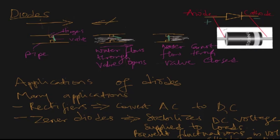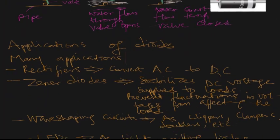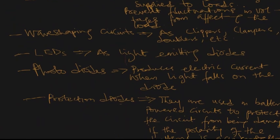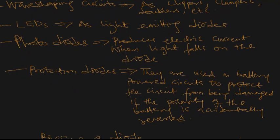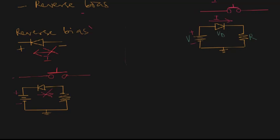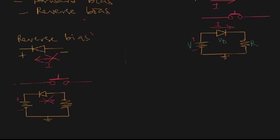In today's class we've seen what a diode is — it's a two-terminal device with an anode (positive terminal) and cathode (negative terminal), analogous to a valve that allows water to flow only in one direction. We've seen various applications including rectifiers for converting AC to DC, Zener diodes for voltage stabilization, wave shaping circuits like clippers, clampers and doublers, light emitting diodes, photodiodes, and protection diodes. Finally, we talked about biasing: a diode can be forward or reverse biased, and must be forward biased to allow current to flow properly.